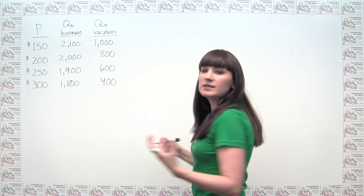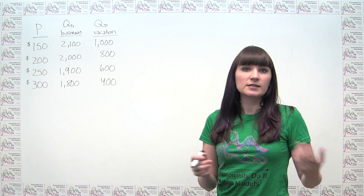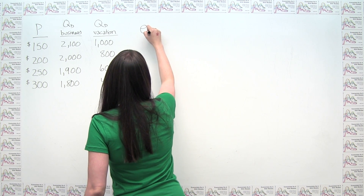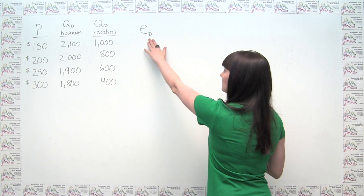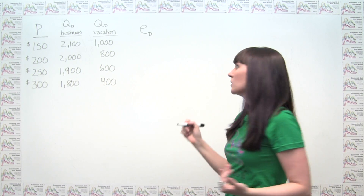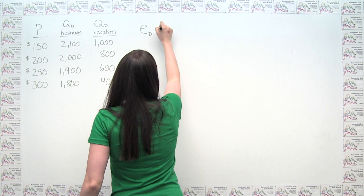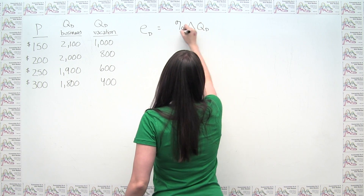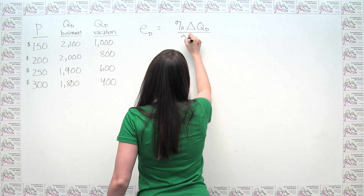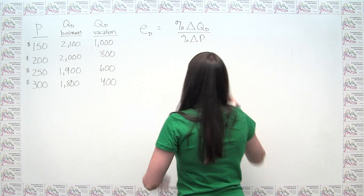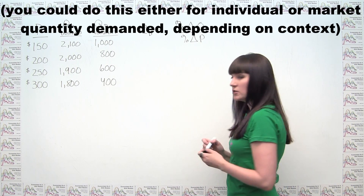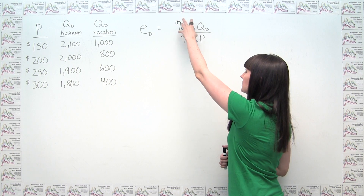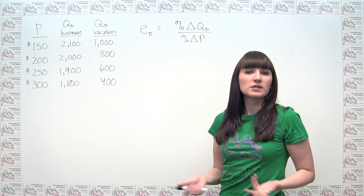The basic formula for price elasticity of demand — usually referred to as little e sub d — is just the percent change in quantity demanded divided by the percent change in price. Price elasticity of demand essentially answers the question: what percent change in quantity demanded do we get in response to a one percent increase in price?